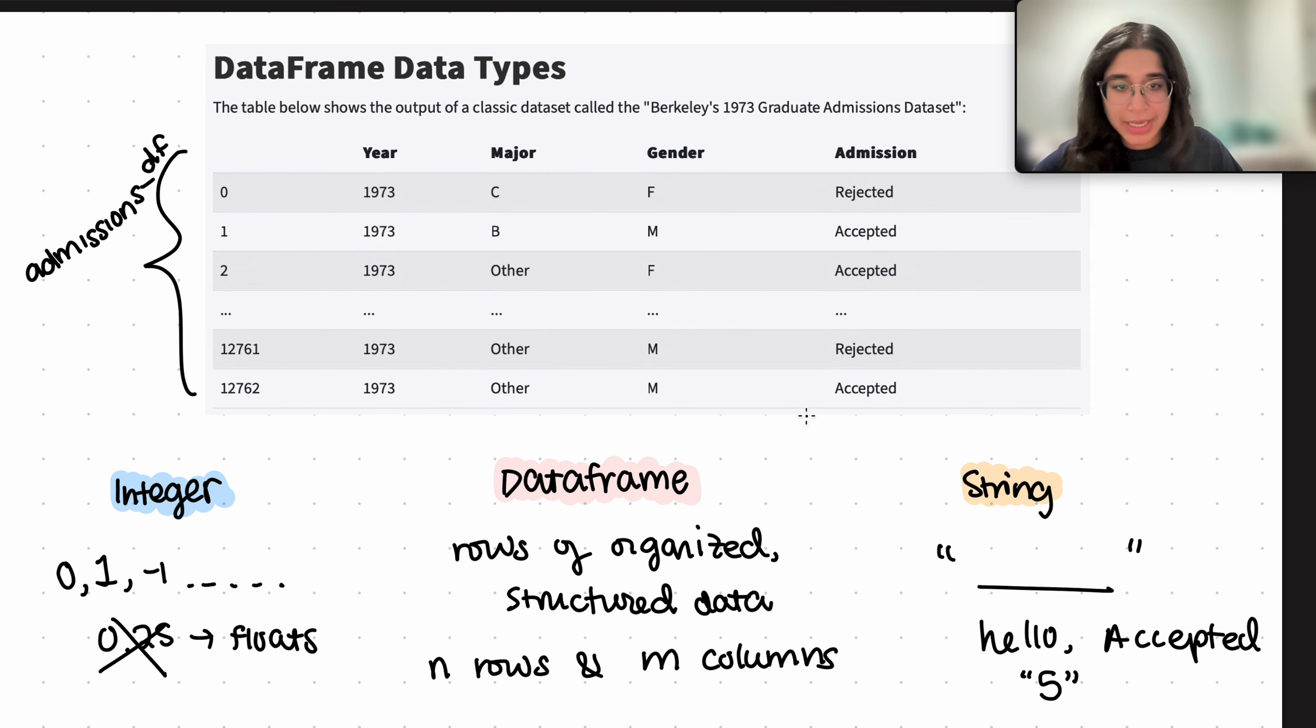And I know we can't see the quotes here because this is an output. If you wanted to see the data type of the admissions column, it will tell you string, even though we can't see the quotes here because this is a printed output.